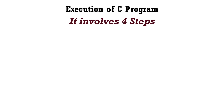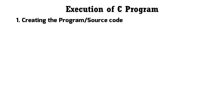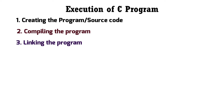In this video we will understand how to execute a C program. Execution of a C program involves the following four steps: first, creating the program or source code; second, compiling the program; third, linking the program; and fourth, executing the program. These are the four steps involved to execute a C program.